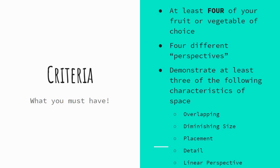Now that you've made it almost all the way to the end, write down that criteria. In your final, you are required to include at least four of your chosen fruit or vegetable. You must include four of the different perspectives — we went over five together: side view, tilted forward, tilted away, top, and bottom. You must also demonstrate at least three of the following characteristics of space: overlapping, diminishing size, placement, detail, and linear perspective — three out of those five. That wraps it up.